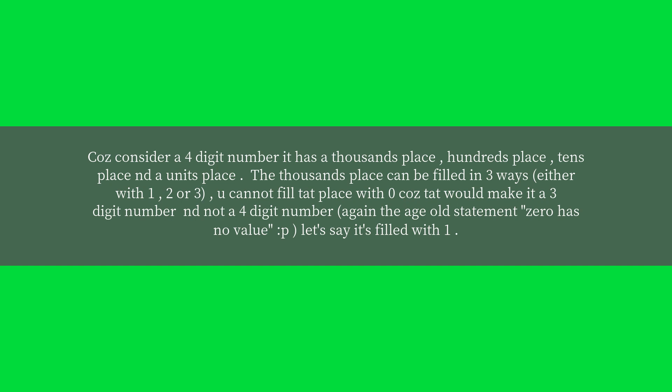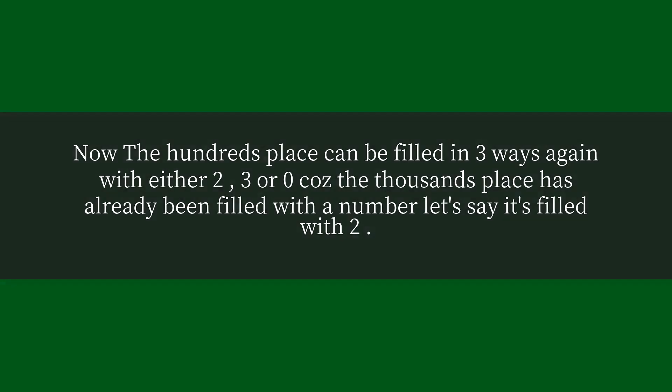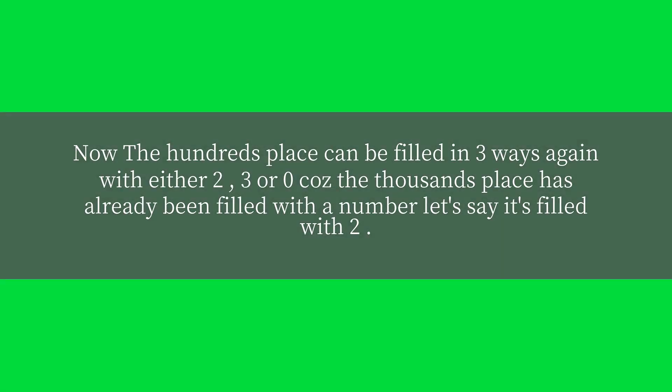Remember, 0 has no positional value at the leading digit. Let's say the thousands place is filled with 1. Now the hundreds place can be filled in three ways again — with either 2, 3, or 0 — because the thousands place has already been filled with a number. Let's say it's filled with 2.